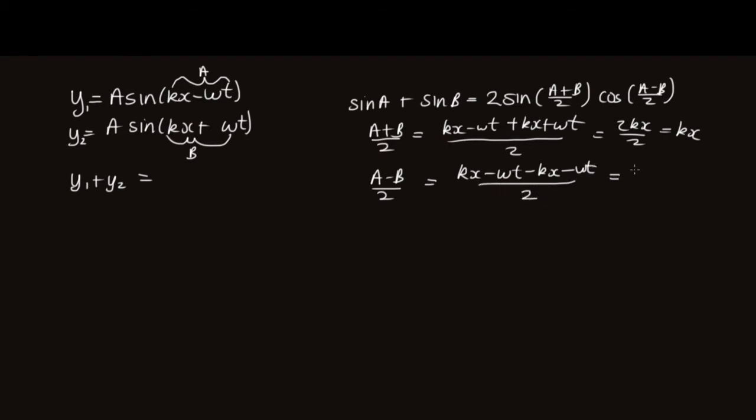And a minus b over two will be kx minus omega t minus kx minus omega t over two. And that will simplify because cos of omega t is the same as cos of minus omega t, just because cos of theta is the same as cos of negative theta.